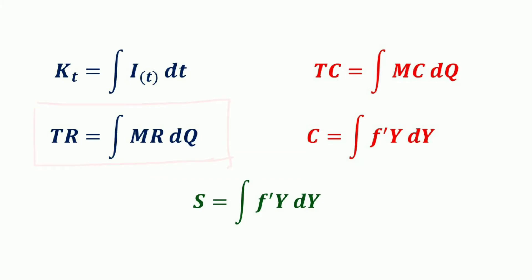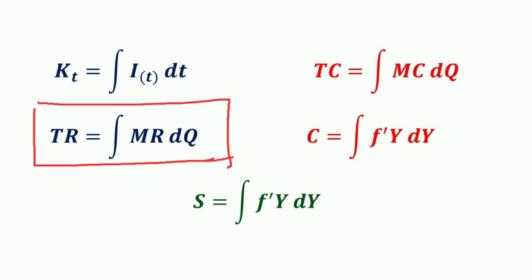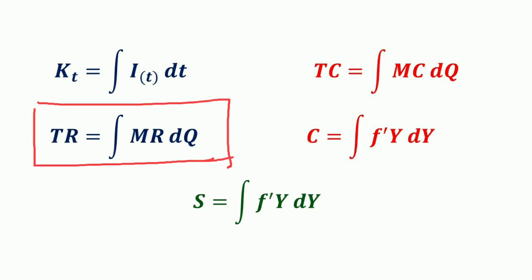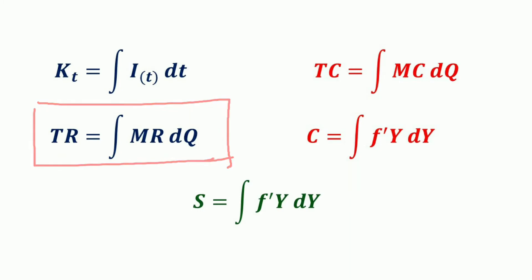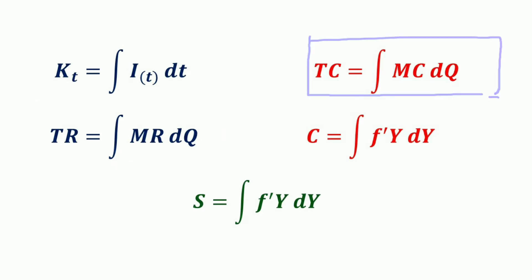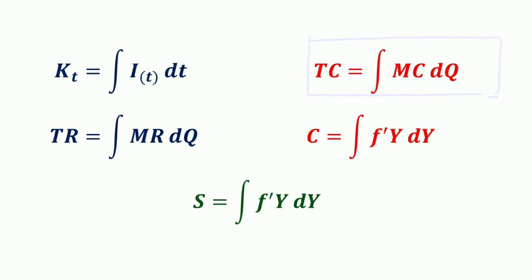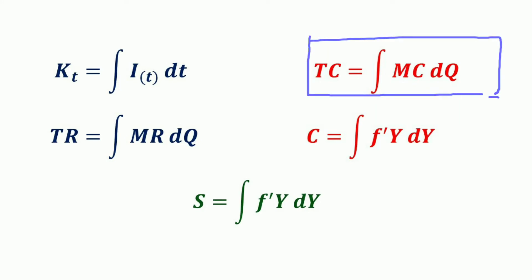Secondly, we have the total revenue function. By definition, a firm's marginal revenue (MR) function can be found by differentiating the firm's total revenue function. Since integration is the reverse of differentiation, given a marginal revenue function (MR), we can obtain the corresponding total revenue function by finding the indefinite integral of the marginal revenue function. We can use the same method to obtain the total cost function given a firm's marginal cost function, as marginal cost can be found by differentiating the firm's total cost function.